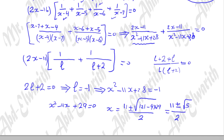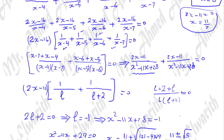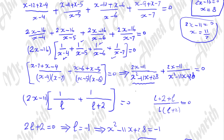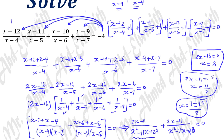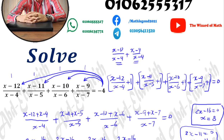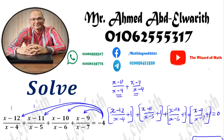This gives two more values of x: x equals (11 plus root 5) over 2 and x equals (11 minus root 5) over 2. So in total, we have four values of x satisfying the equation. Thank you for watching — don't forget to subscribe to our channel, like, share, and comment on our video. Thank you and goodbye.